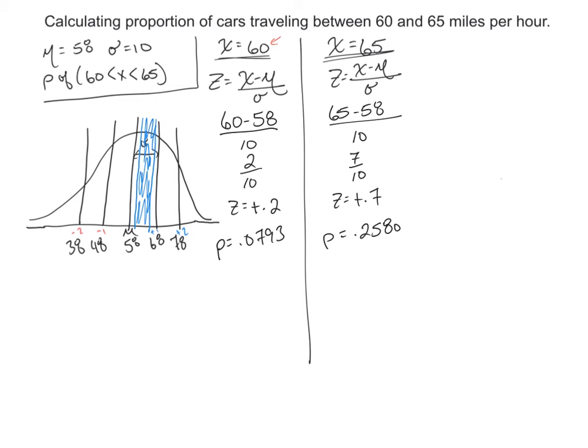So what I want to do then is find the proportion of cars that were traveling between 60 and 75 miles an hour. All I need to do is add these two together.